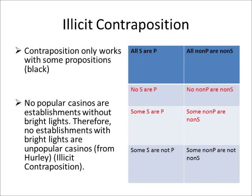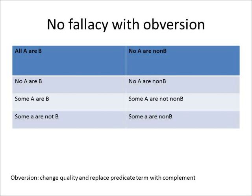Let's look at illicit contraposition. Remember, contraposition is where you flip the subject and predicate and take the complement of each — so 'all S is P' becomes 'all non-P is non-S.' This only works for two of the four categorical propositions. If you try to contrapose E and I propositions, it's illicit contraposition. For example: 'No popular casinos are establishments without bright lights' is an E proposition, and taking the contraposition to get 'no establishments with bright lights are unpopular casinos' — that's invalid, because you can't contrapose an E statement and get the equivalent meaning. That example is from Patrick Hurley. With obversion, it works for all four statements, so there's no special fallacy there.